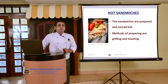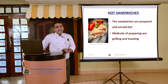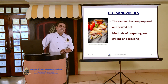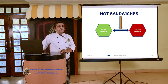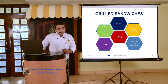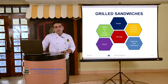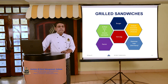Now we start with hot sandwiches. Hot sandwiches are prepared and served hot, and the methods of preparation are grilling and toasting. On that basis, sandwiches are divided into two categories: grilled sandwich and toasted sandwich. In the grilled sandwich category, we have the burger, panini, croque monsieur or madame (originated from France), grilled ham and cheese sandwich, hot dog, and Smørrebrød-style open sandwich originated from Germany.